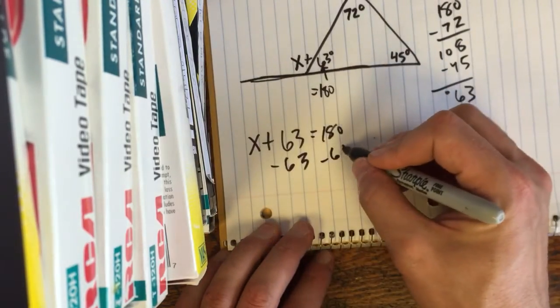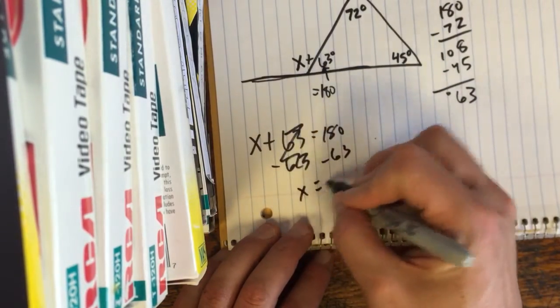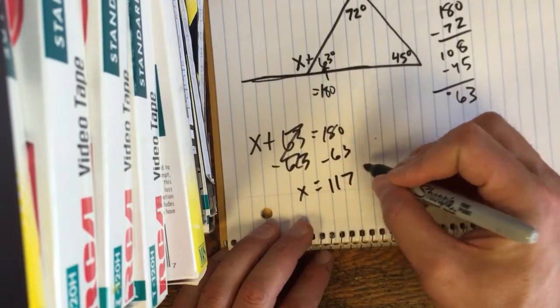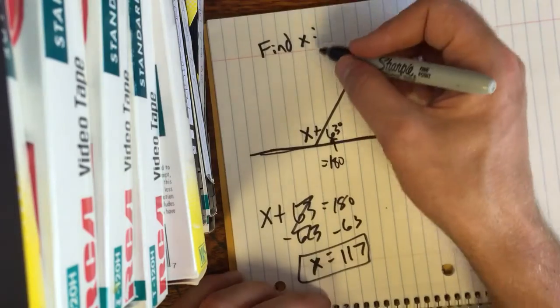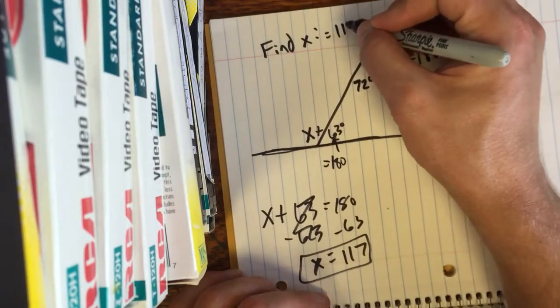Subtract 63 from both sides, it goes away, x equals 117. Boom. You're done. We found x degrees.